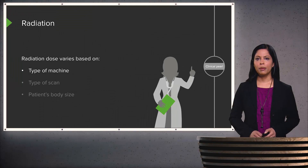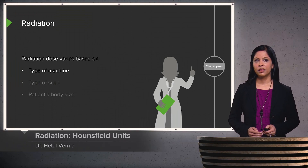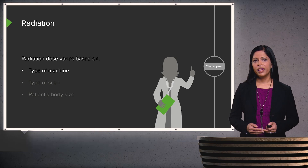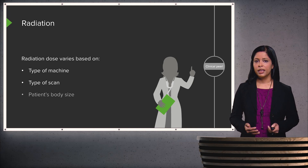Let's review some common CT techniques and discuss how these techniques can be manipulated to help you identify abnormalities. Radiation is administered during a CT scan, and it varies depending on the type of machine that's used, the type of scan that's being performed, and the patient's body size.